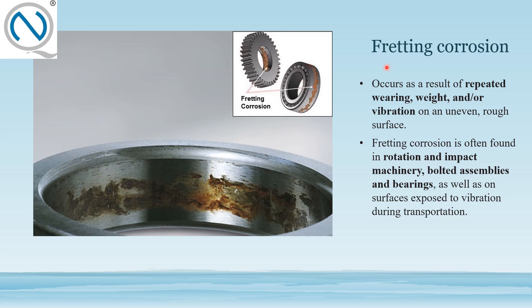Whenever you encounter fretting corrosion, relate this word to gears or rotational parts like bearings, as it occurs as a result of repeated bearing and weight or vibration on uneven rough surfaces. Fretting corrosion is often found in rotation and impact machinery, bolted assemblies, and bearings, as well as on surfaces exposed to vibration during transportation.